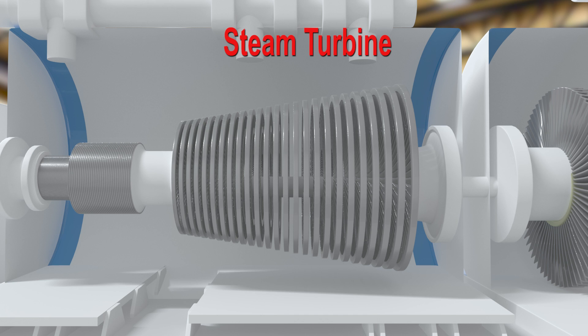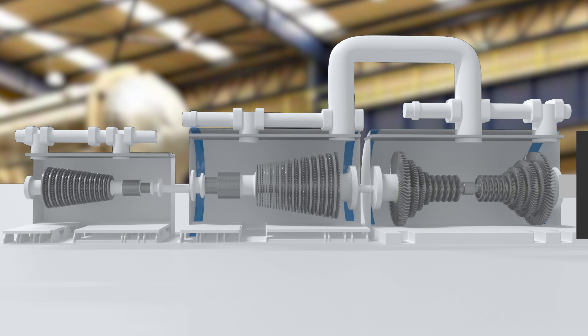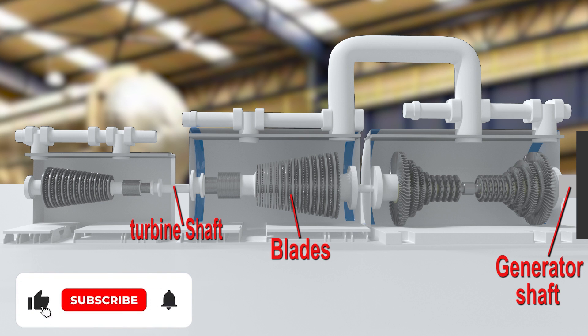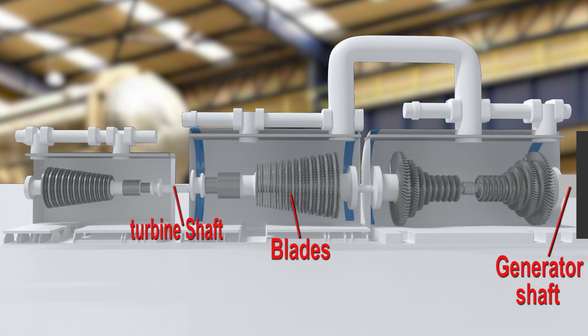Let's start with what is a steam turbine and its role in a thermal power plant. Steam turbines are huge machines that extract heat or thermal energy of superheated steam and convert it into kinetic or mechanical energy. When superheated steam with high temperature and pressure impacts turbine blades, the blades start rotating. This causes rotation of the turbine shaft on which blades are mounted. The turbine shaft gets coupled with the generator shaft, so rotation of the turbine shaft causes rotation of the generator shaft as well. Finally, rotation of the generator shaft produces electricity.